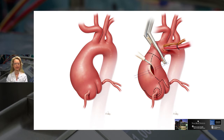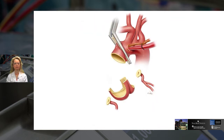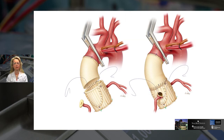We give cardioplegia alternating retrograde and antegrade. After the cross clamp is placed, the ascending aorta is opened, and then we replace it with a Dacron graft. We proceed with the distal anastomosis first, and then we proceed with the proximal repair. The proximal repair can involve aortic valve replacement, aortic root repair, or aortic root replacement, depending on the pathology.